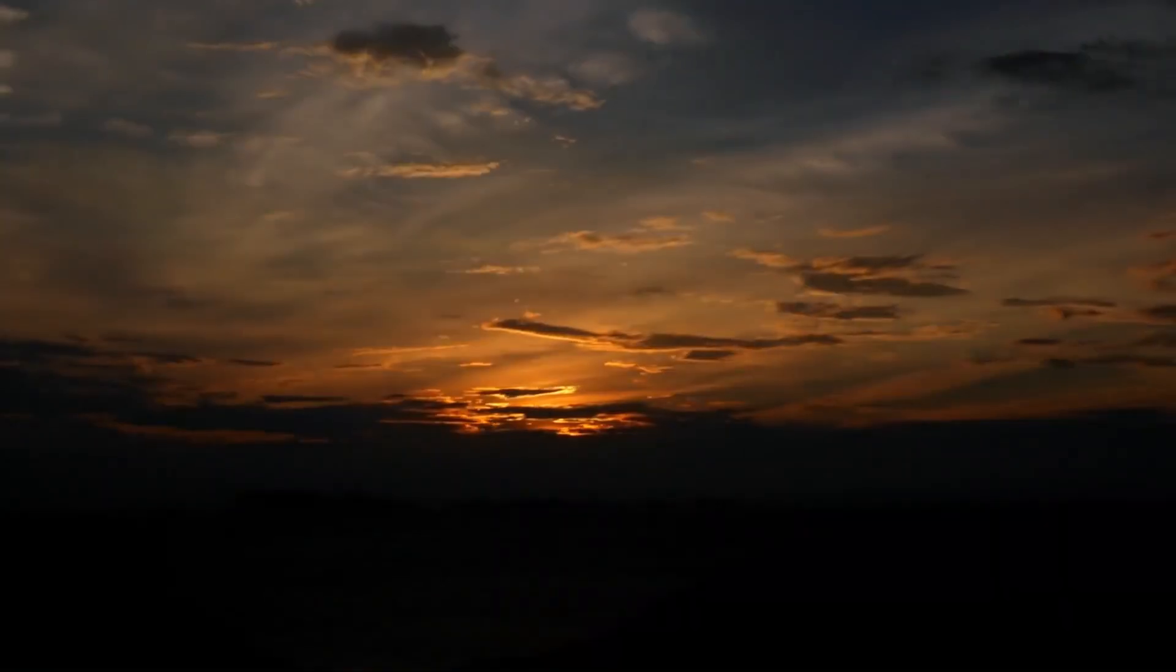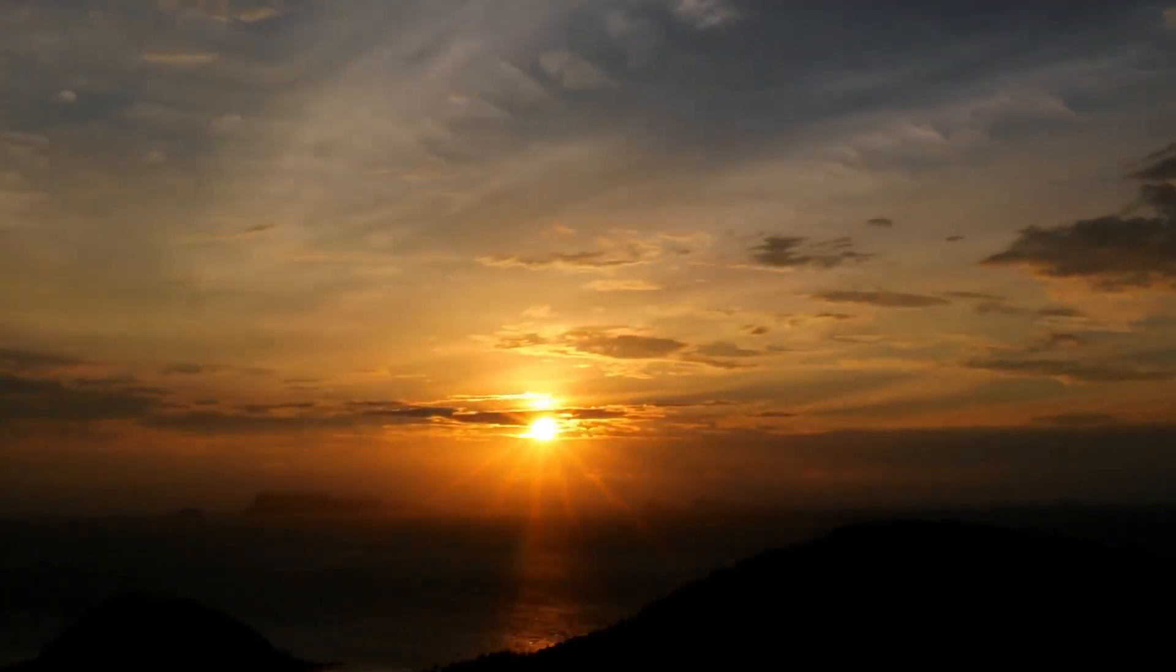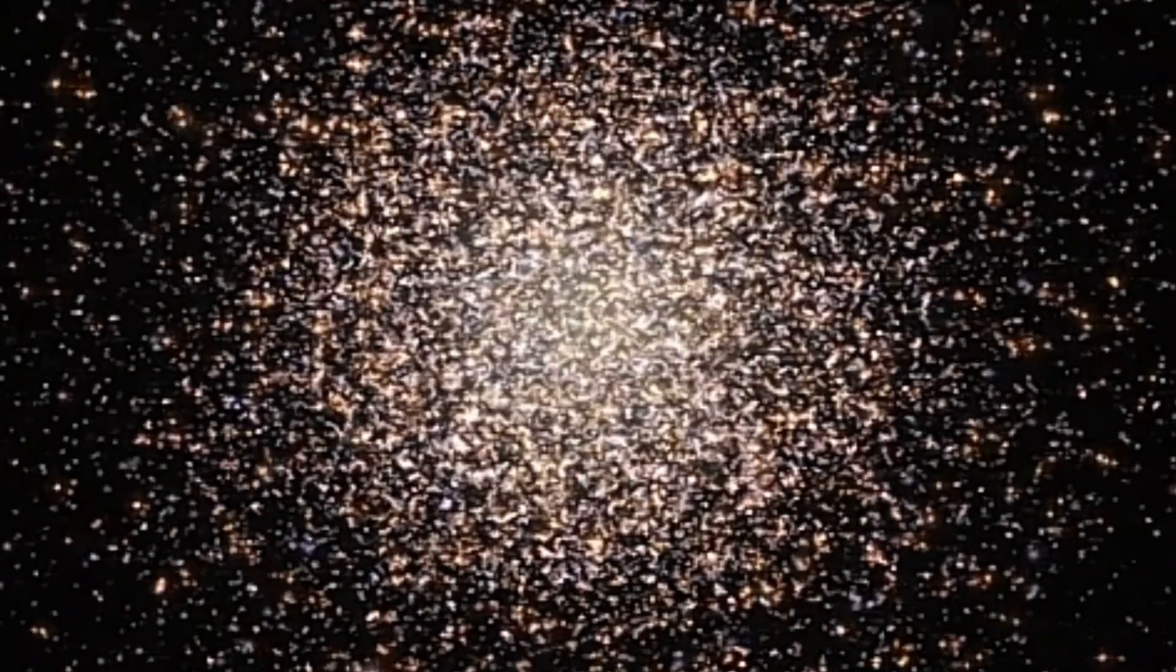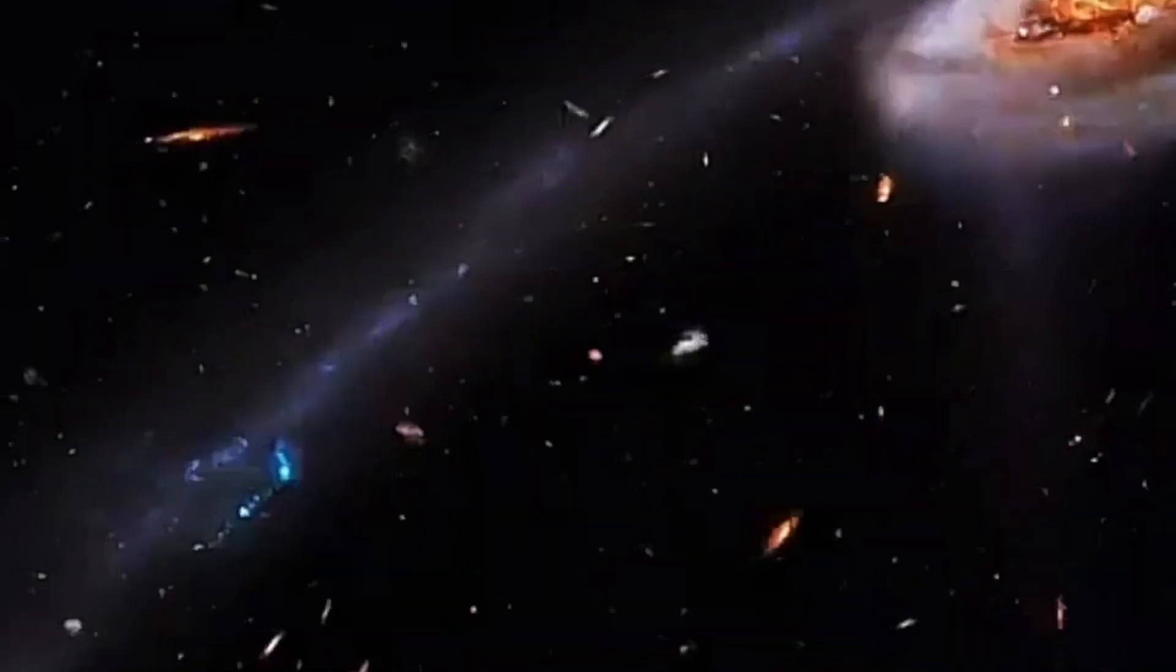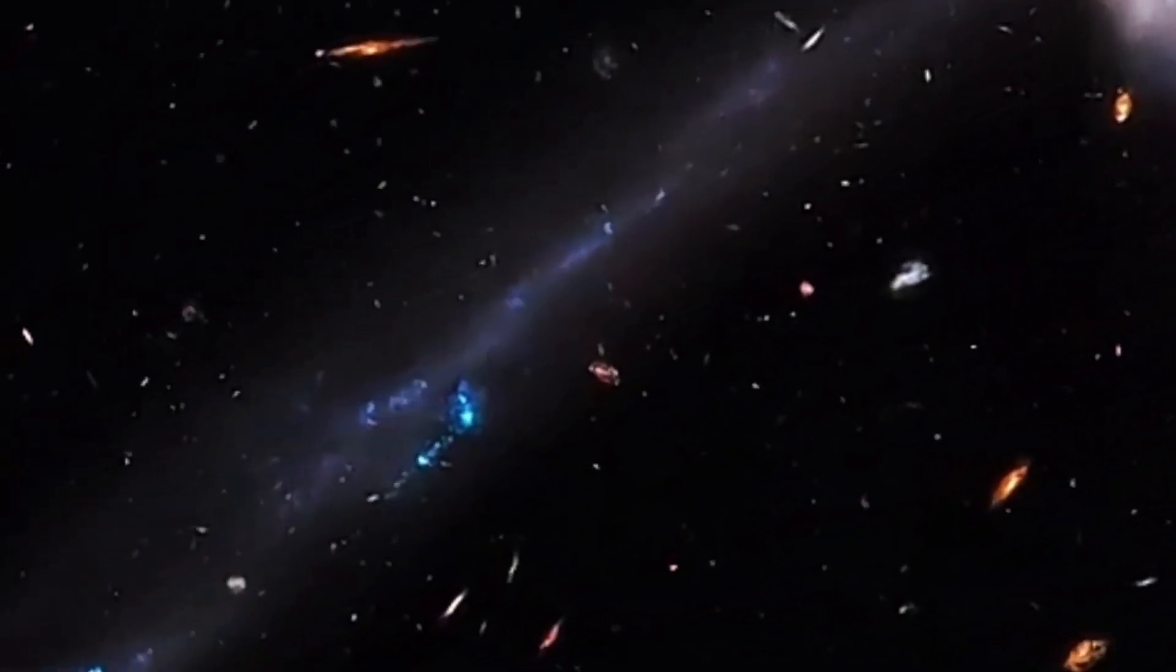After the end of Betelgeuse, an extremely compact remnant will remain, either a neutron star or a black hole. Betelgeuse may even form a spectacular cosmic nebula such as the colorful crab nebula. That would, of course, be a very special spectacle.